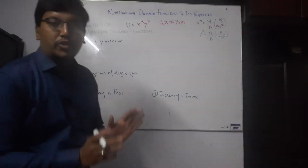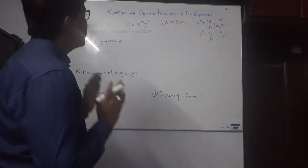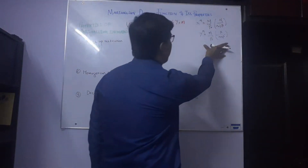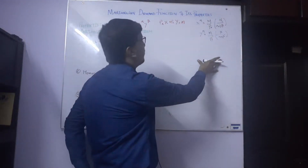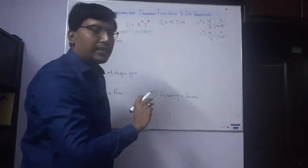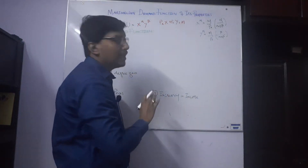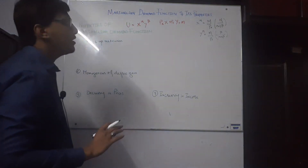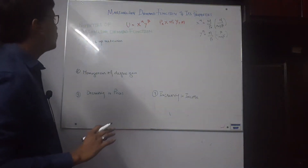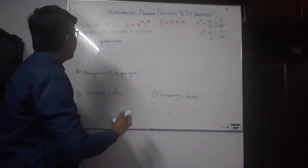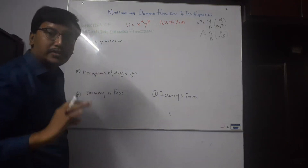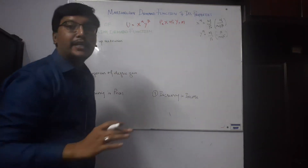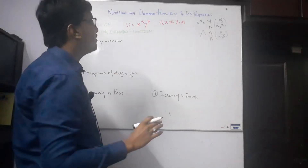We calculated the Marshallian demand function using the Lagrange multiplier, and these functions represent optimal consumption given a budget constraint, but they satisfy some specific properties. The first property is the adding-up restriction: these Marshallian demand functions will satisfy the adding-up restriction, meaning when we put them into our budget constraint, they satisfy it.